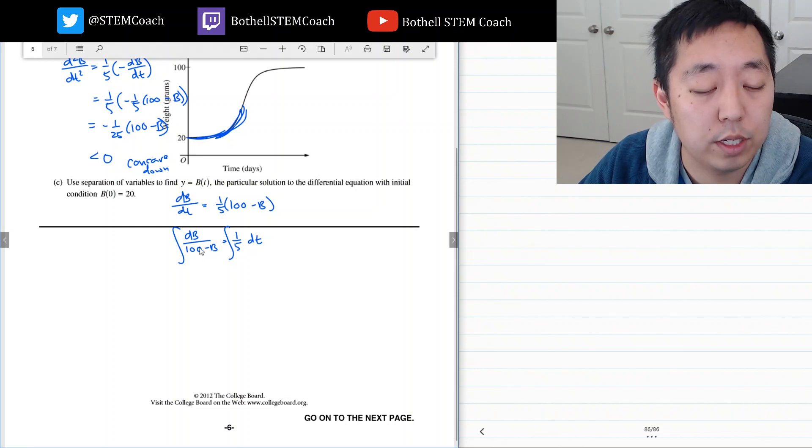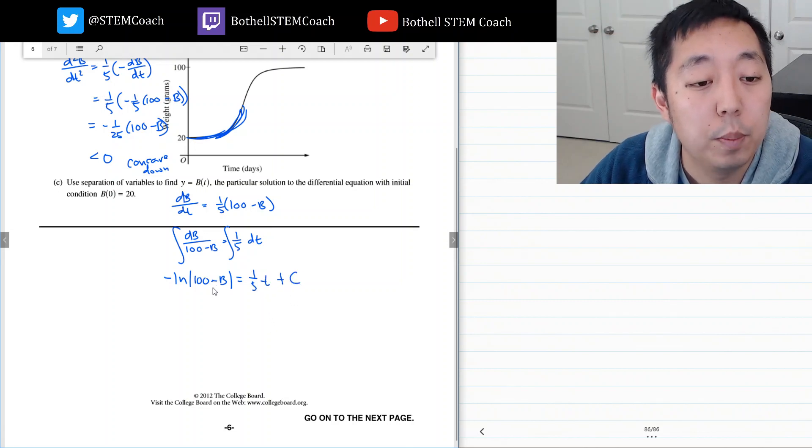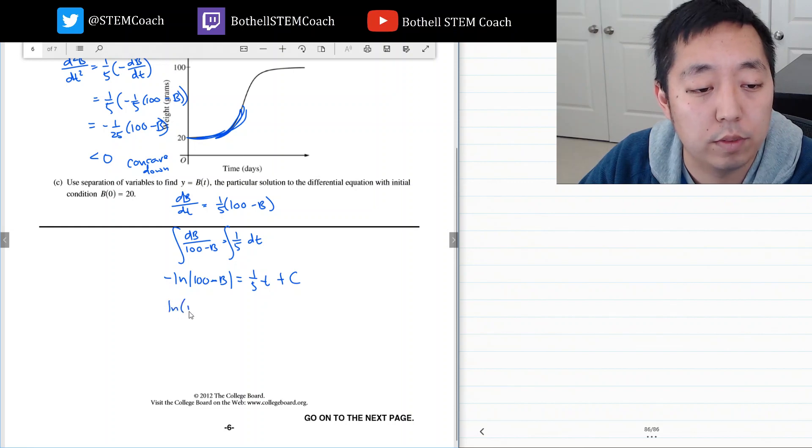This, if I did a u-substitution, you would find like u down here. I would just get negative natural log absolute value of 100 minus b equals one-fifth t plus c. But 100 minus b is always positive in our interval, so I can get rid of the absolute value signs and multiply through by negative. So natural log of 100 minus b...